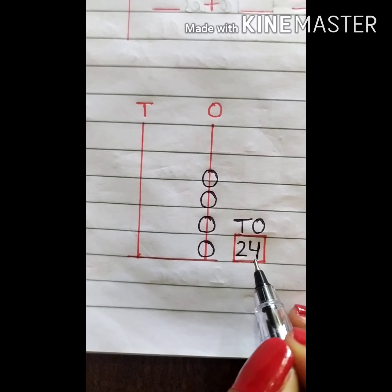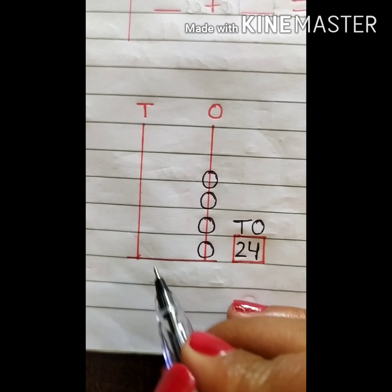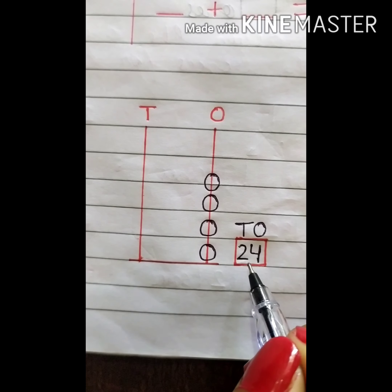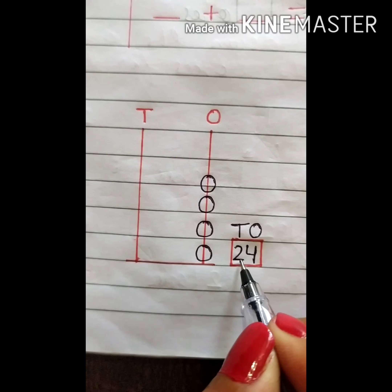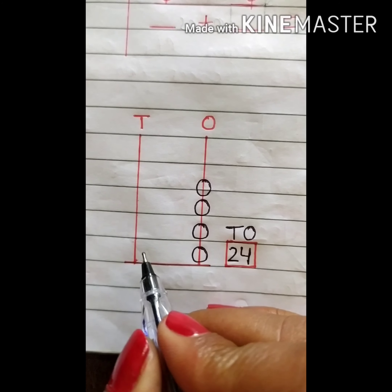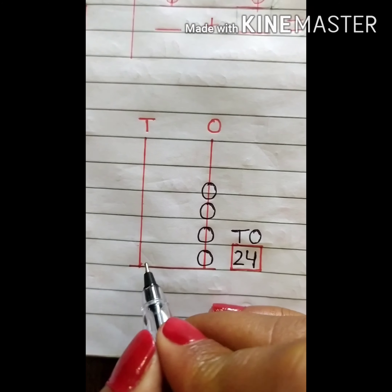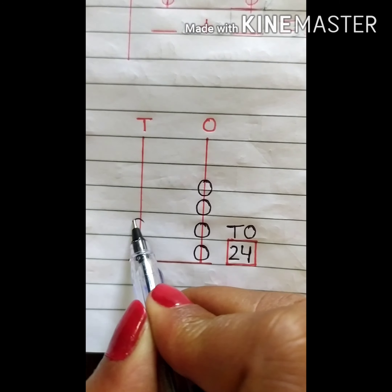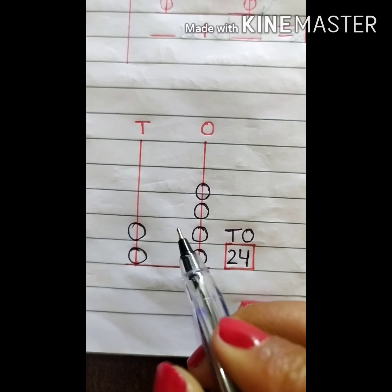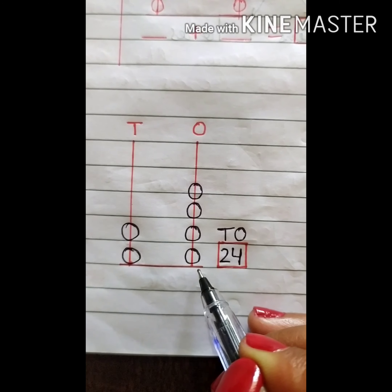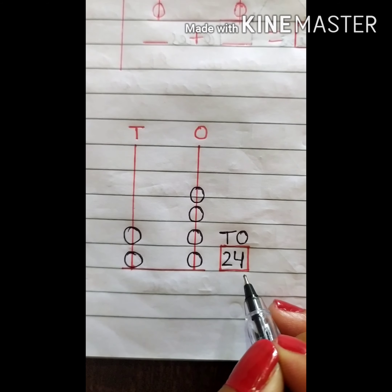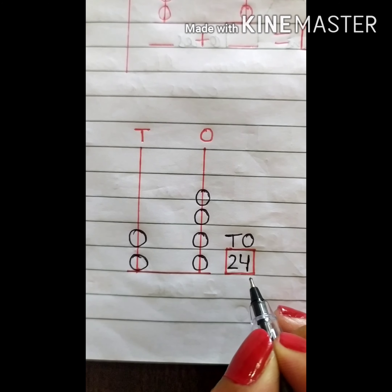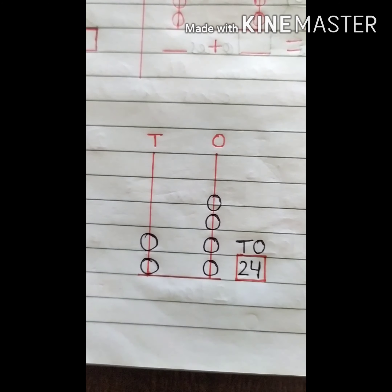Now we will draw beads in the tens place. Which number is at tens place? It is number 2, so we will draw 2 beads: 1 and 2. So we have drawn beads for number 24 and shown it on the abacus.